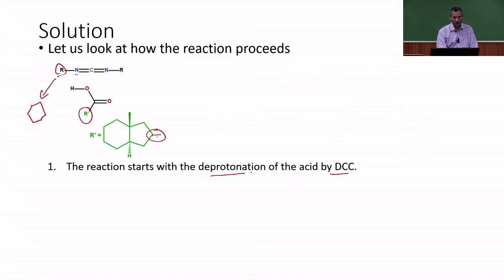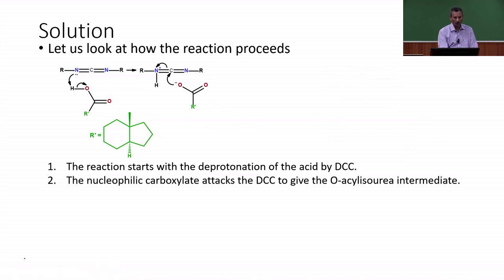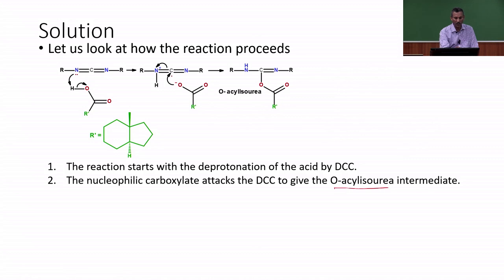In the first step, the reaction begins with deprotonation of the carboxylic acid by DCC — the acidic hydrogen is abstracted by the nucleophilic nitrogen, giving the carboxylate anion. The nucleophilic carboxylate anion then attacks the central carbon of DCC to give the O-acyl isourea intermediate, with concomitant shift of bonding electrons toward the nitrogen (which carries a positive charge). The result is the O-acyl isourea intermediate.